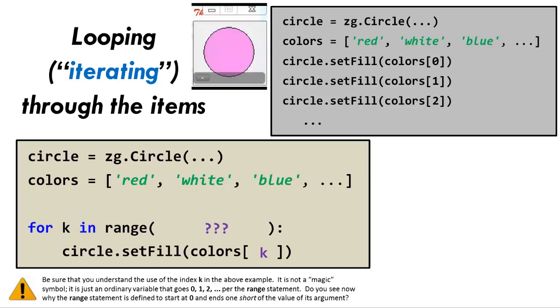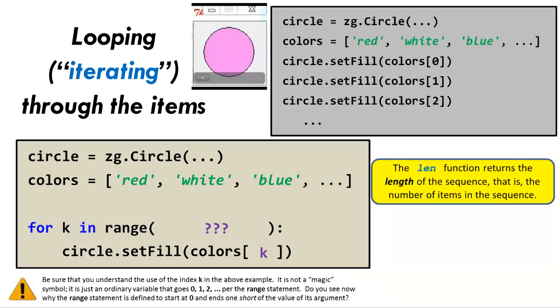Speaking of that range statement, let's return to it. We want the loop to go as many times as there are items in the list. There is a special function called len, L-E-N, that gives the length of a sequence. That is, the number of items in the sequence. So that's what we want in our range statement.